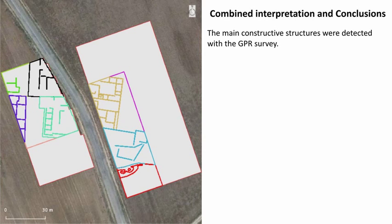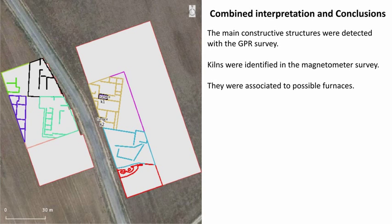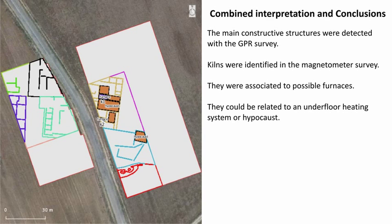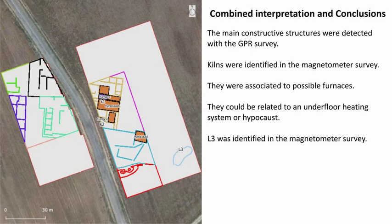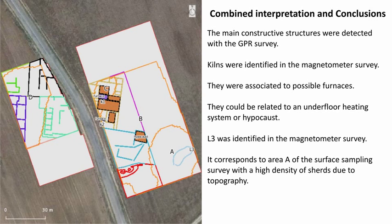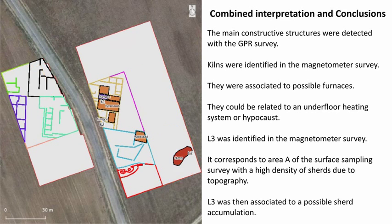The main constructive structures were detected with the GPR survey. Kilns were identified in the magnetometer survey and were associated to possible furnaces, which could be related to an underfloor heating system or hypocaust. L3, identified in the magnetometer survey, corresponds to Area A of the surface sampling survey with the high density of sherds due to topography, and was associated to a possible sherd accumulation.